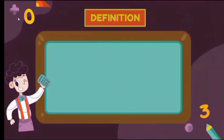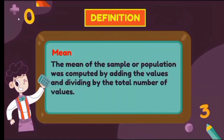To begin, let me define the word mean. The mean of a sample or population is computed by adding the values and dividing by the total number of values. So when you hear the word mean, it is more about getting the average of the different outcomes or results.